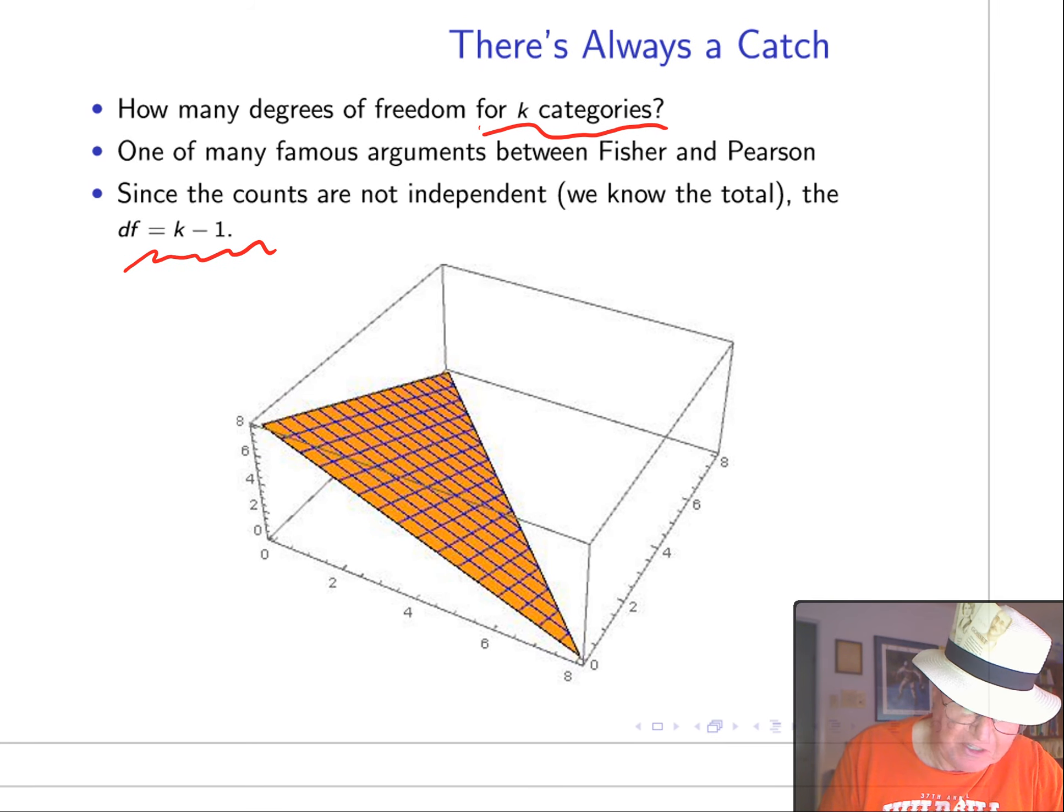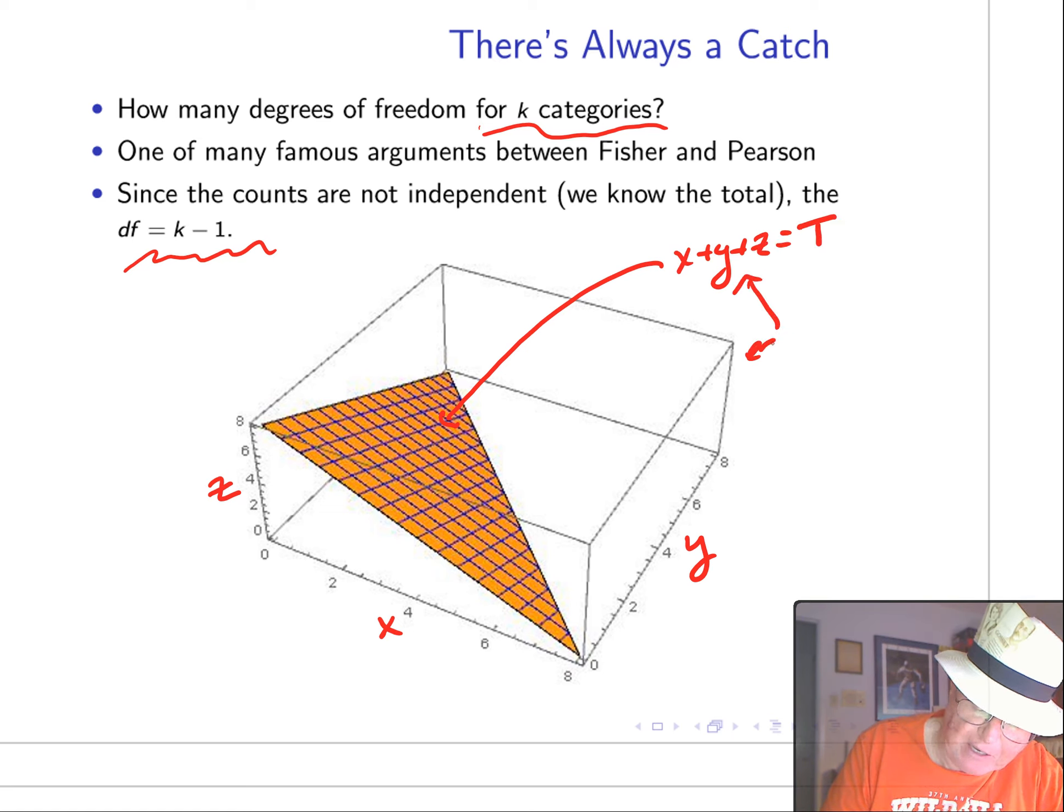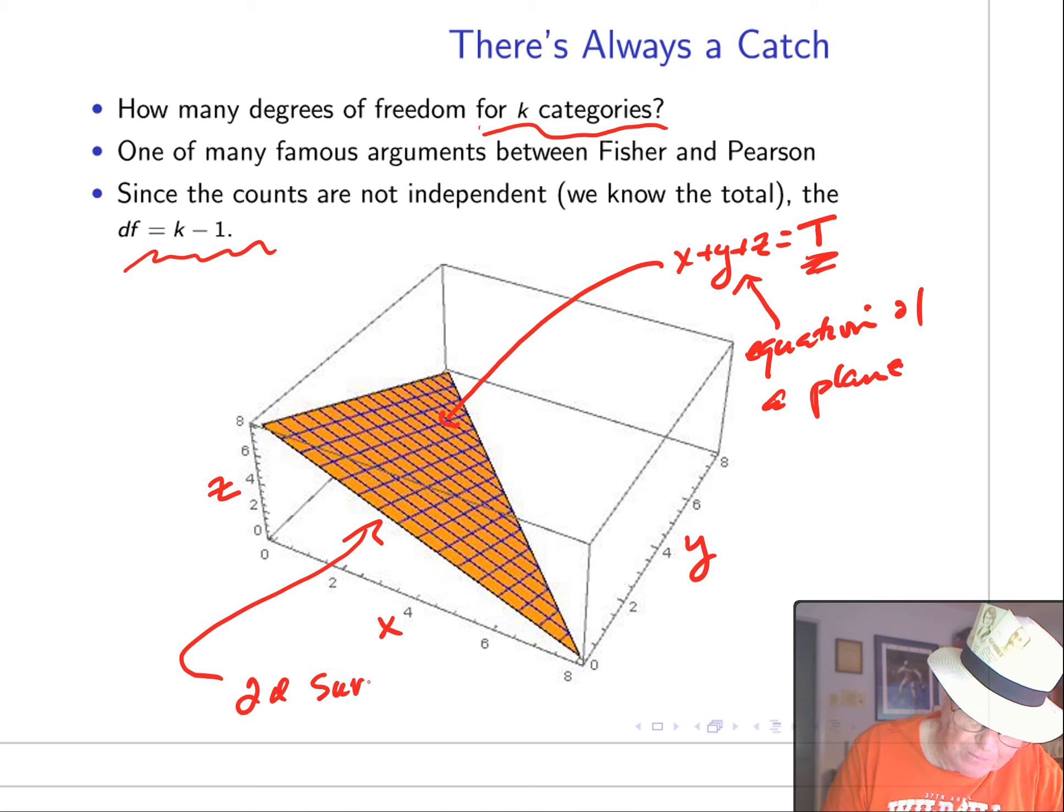How does that make sense? Well, let's assume that we just have three categories. Oh, I know. We'll call them something really clever, like X, Y, and Z. Now, since we know the total number of counts in the sample, X plus Y plus Z equals some constant T, and this is just the equation of a plane. So, any point X, Y, Z, has to be on that plane in order to maintain the total. Well, how many dimensions does a plane have? This is a two-dimensional surface, which means two degrees of freedom. Pretty slick.